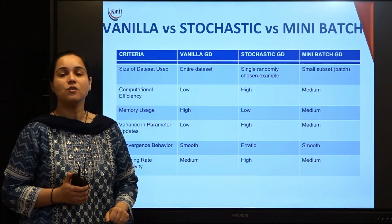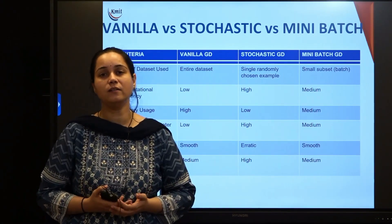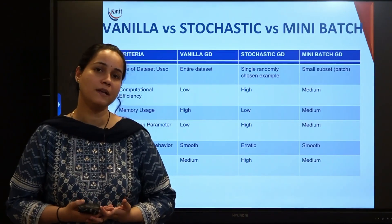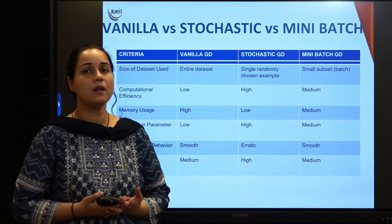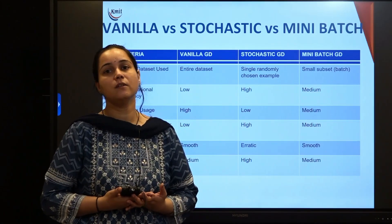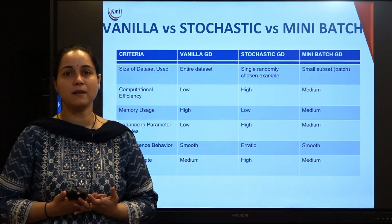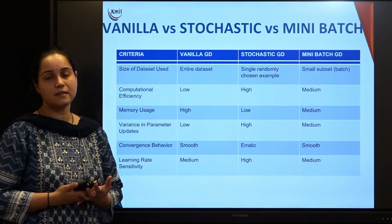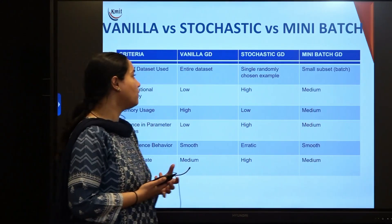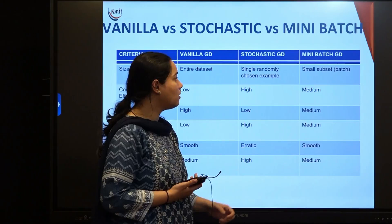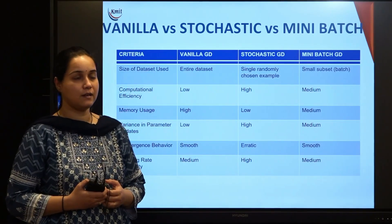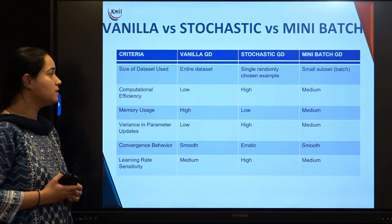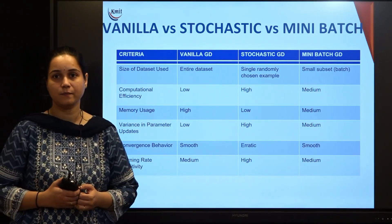For learning rate sensitivity, it is medium for both vanilla and mini-batch but high for stochastic. The choice of gradient descent algorithm is very application-specific, but if you want the best of both worlds, mini-batch gradient descent is generally preferred for deep learning models. Mini-batch gradient descent takes the best out of both vanilla and stochastic techniques. Thank you.